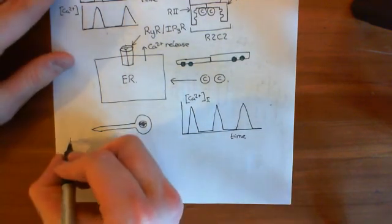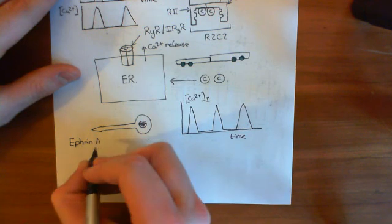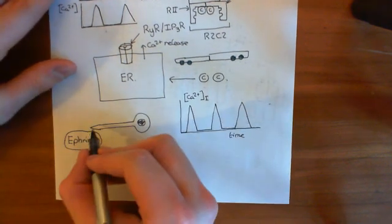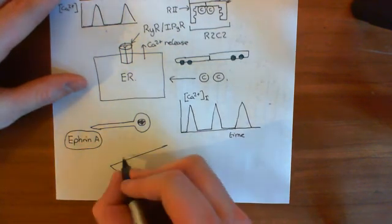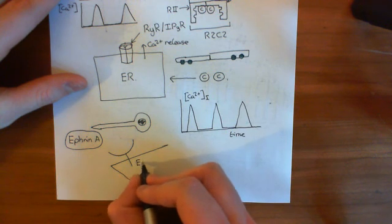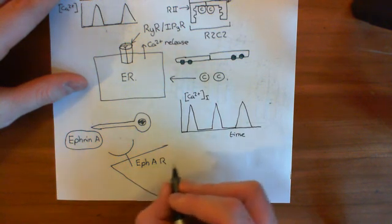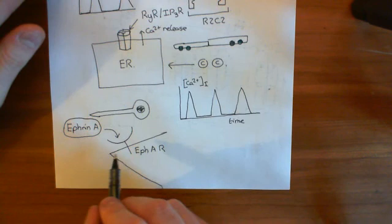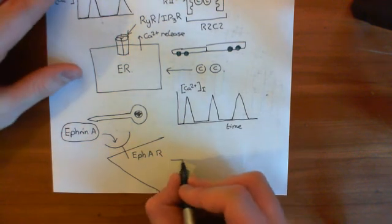If ephrin A is in the vicinity of this axon growth cone, the axon growth cone will have ephrin A receptors — often abbreviated to FA receptor. Ephrin A is going to come in and bind to this ephrin A receptor. And if it binds to the ephrin A receptor and you have these huge pulses in calcium, then what you get is retraction of the growth cone.